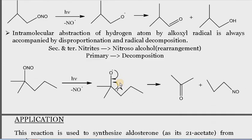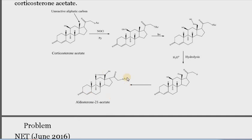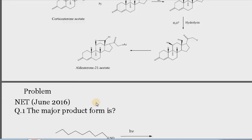What are the applications of the Barton reaction? This reaction is used to synthesize aldosterone as its 21-acetate from corticosterone acetate. We convert corticosterone acetate into aldosterone acetate by treating it with nitrosyl chloride in pyridine, then irradiating it. Here, at this particular position, the nitric oxide gets attached with this oxygen, and after hydrolysis we get aldosterone 21-acetate.